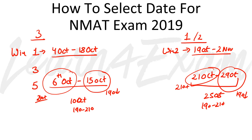To summarize: if you can afford all three attempts — though it is an expensive option — the best combo is Windows 1, 3, and 5. This gives the best results. If you are only planning one or two attempts, Window 2 or any other window works fine. I've shared Window 1 and Window 2 dates now; I'll share Windows 3, 4, and 5 dates later once I see the pattern and scenario. All of this is based on past trends of recording dates.